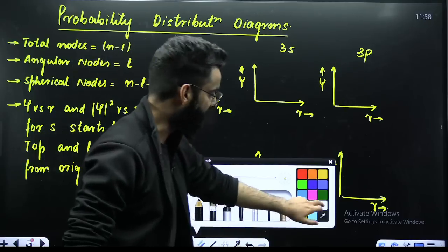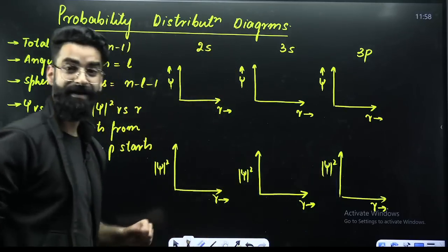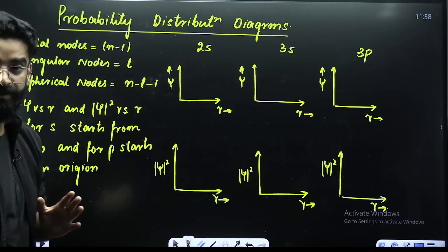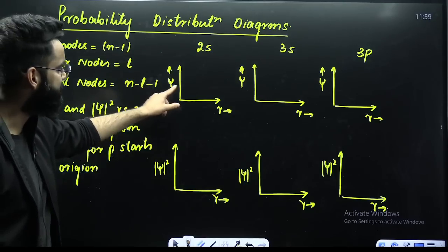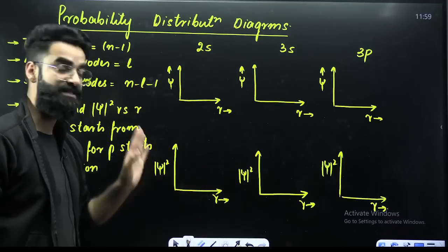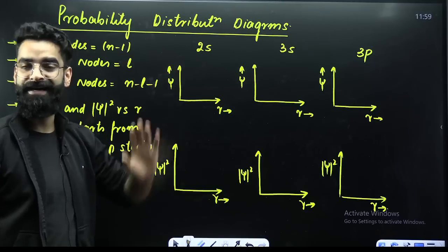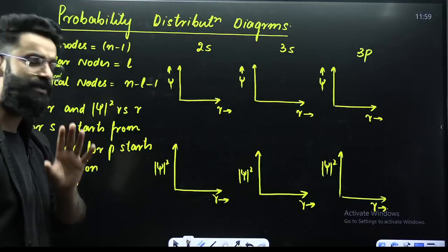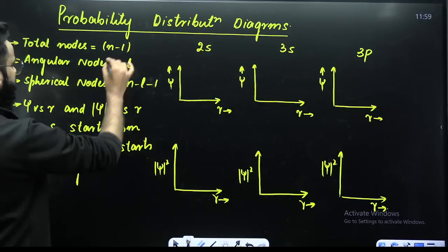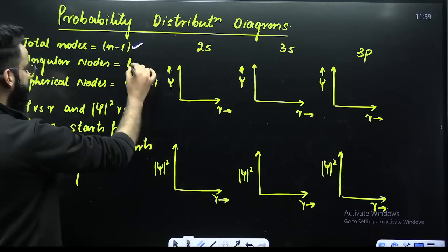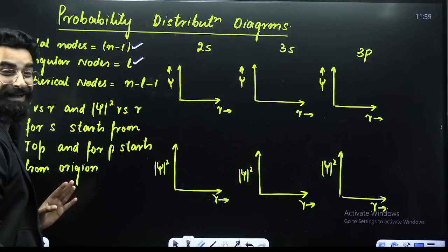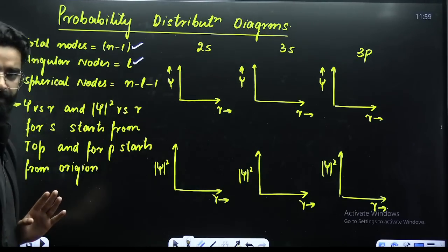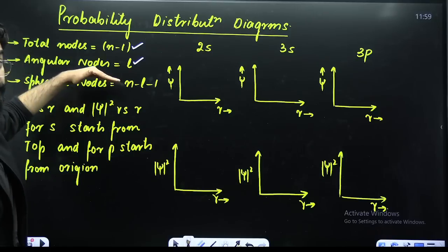The first type of question that will be asked regards probability distribution curves — psi versus R and psi squared versus R graphs for your S and P orbitals. Few things you need to remember: total number of nodes is n minus 1; angular nodes equals the value of L as the azimuthal quantum number; spherical nodes equals n minus L minus 1. These are the three formulas you need to remember.